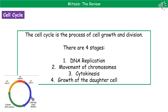One thing we need to understand is something called the cell cycle. When we're talking about the cell cycle, we're referring to the process of cell growth and cell division. It's divided up into four key stages: first is DNA replication, then we see the movement of chromosomes, third is cytokinesis, and then that final stage is the growth of the daughter cell.